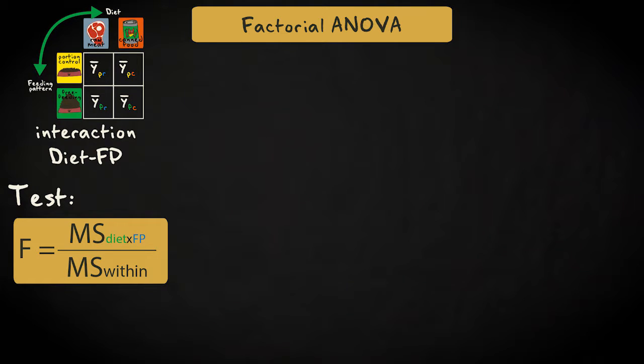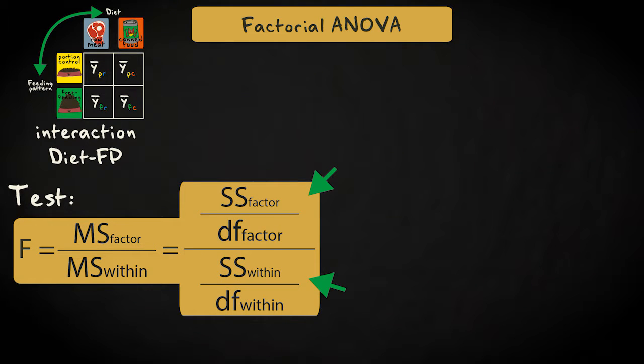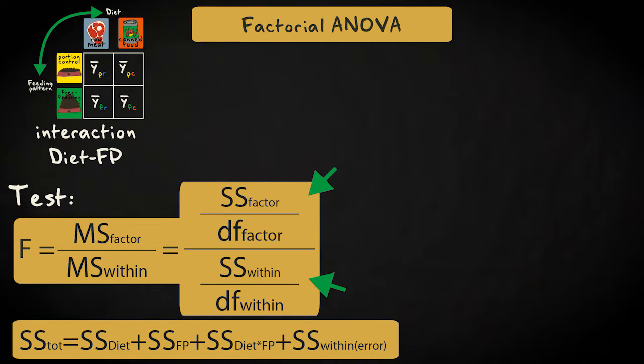Now you won't be asked to calculate the sums of squares for main and interaction effects manually. However, you should be able to calculate the F values based on sums of squares provided by software. It helps to know that the total sum of squares, all the variation in the response variable, is equal to the sum of squares for diet, plus the sum of squares for feeding pattern, plus the sum of squares for the interaction, plus the within-group or error sum of squares.